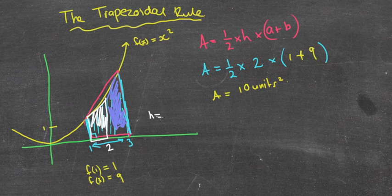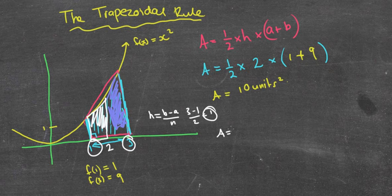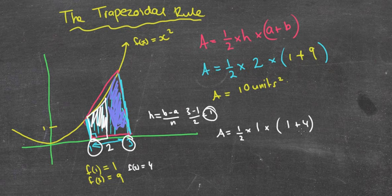Now that comes from this little formula we say b minus a over n, where b and a are the values of my x's here, 3 and 1, and n is the number of trapeziums I've got, which makes it 3 take away 1 over 2, which makes a height of 1. So if I was doing this one, I'd say a half times 1 times, my first one we already know was 1, but now I've got a new height at 2. So 2 squared, if I put function 2 in there, 2 squared is 4, so 1 plus 4. So that's my first trapezium.